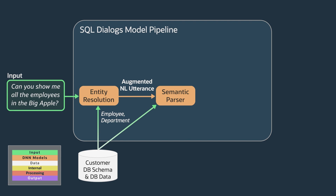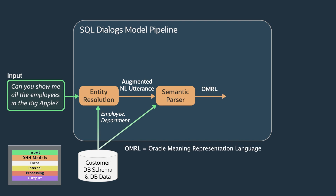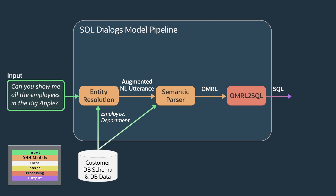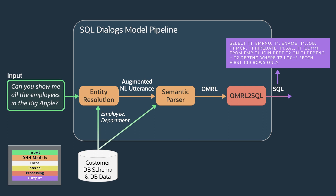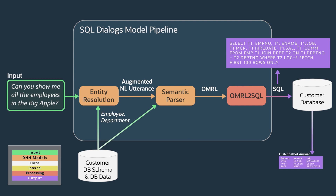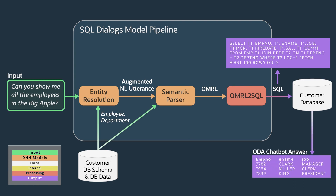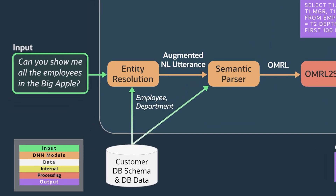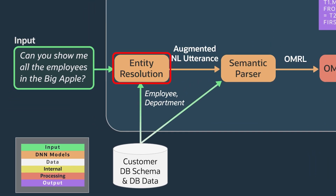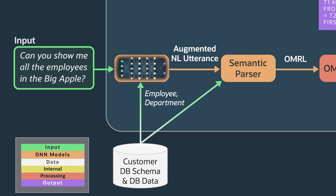The semantic parser produces an intermediate representation that we call Oracle Meaning Representation Language. And then finally, this Oracle Meaning Representation Language is converted into the SQL output using a rules-based processor. The SQL is then executed against the customer's database to generate the output shown by the ODA chatbot back to the user. We use the entity resolution machine learning model to establish relationships between the tokens or words in the natural language utterance with entities in the customer's database.